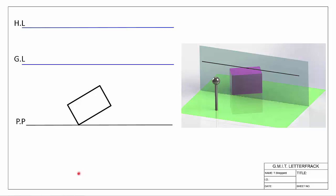With two-point perspective, the main difference is that we have more than one direction. We have lines moving in this direction — the top edge, the back edge, all parallel to each other moving off into the distance to a single vanishing point. But we also have lines moving in a second direction, along the base and the side, and because they move in a different direction they need a second vanishing point.